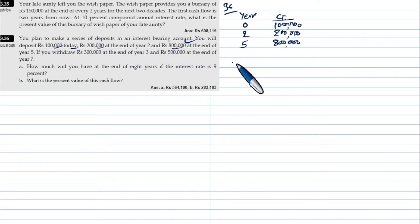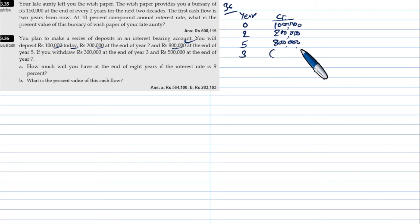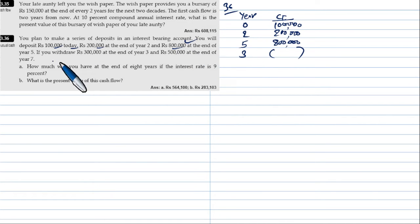If you withdraw rupees 3 lakh at the end of year 3, that is a cash outflow — a negative cash flow — shown as a withdrawal at the end of year 3.